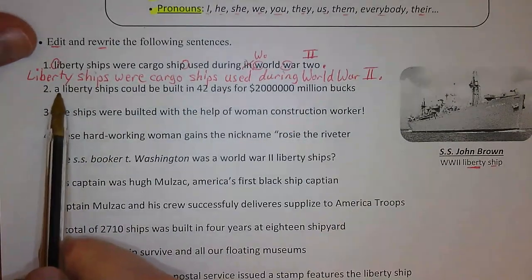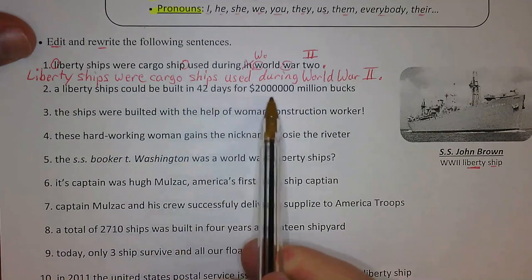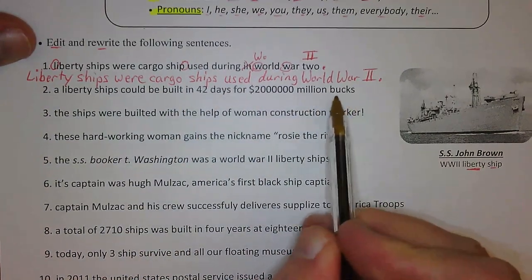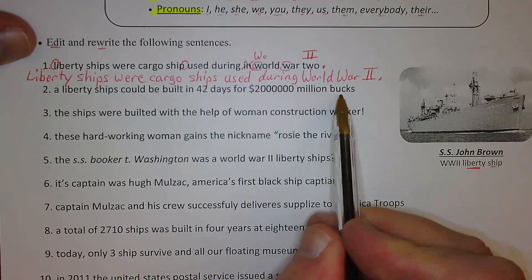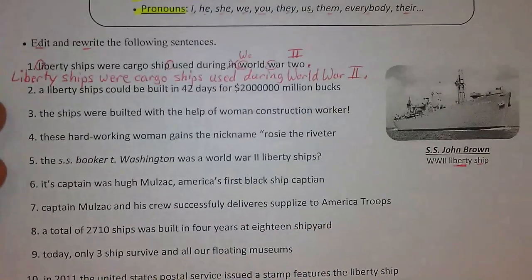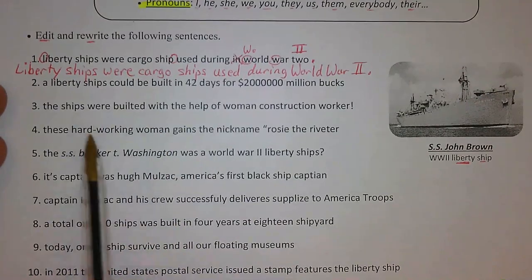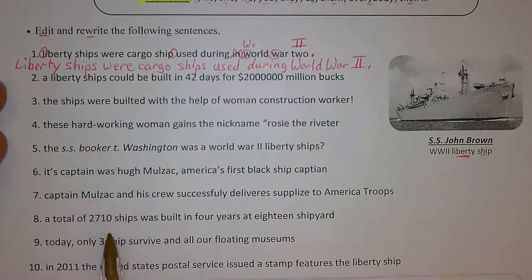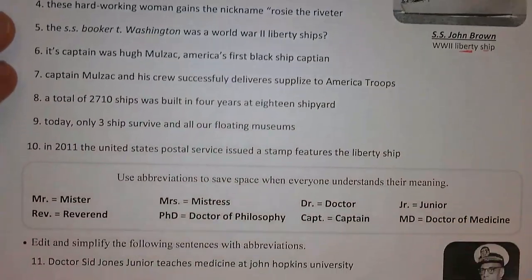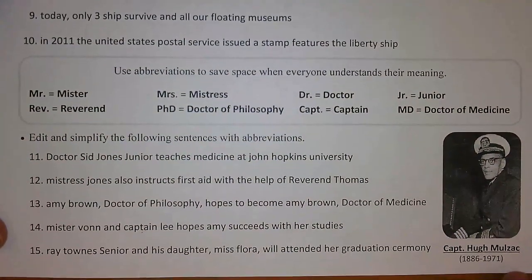Looking at number two, same thing — some capitalizing needs to take place. Also, 'two million bucks' — change that to 'two million dollars,' since you want to formalize any slang. Go ahead and do numbers one through ten, and then as we get to the bottom, there's a section on abbreviations.